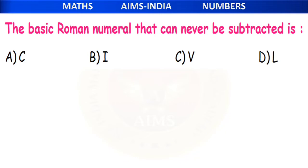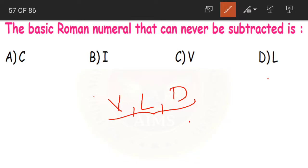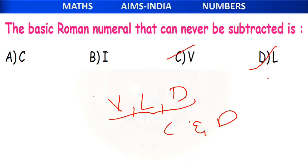Next: the basic Roman numeral that can never be subtracted is dash. If you remember the rules, V, L, and D can never be subtracted. Of these, both V and D are present in the options. So option C and option D are our correct answers — these two can never be subtracted.